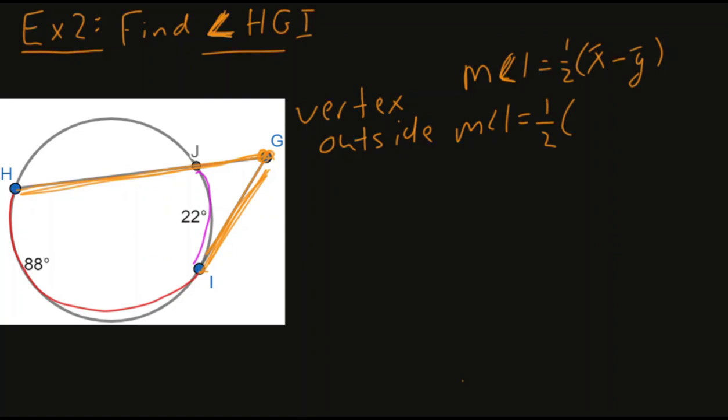And let's see, for our arc x, I coded it using this red. And so, let's see, we know our larger arc, arc x, is equal to 88 minus, and let's go to this magenta, this minor arc, JI, which is 22 degrees.